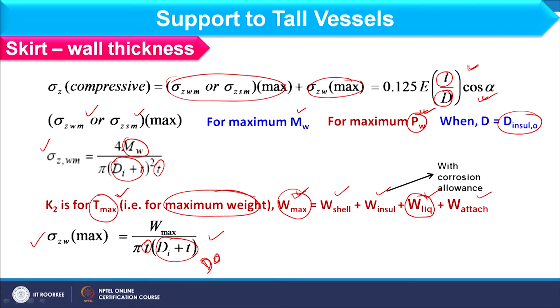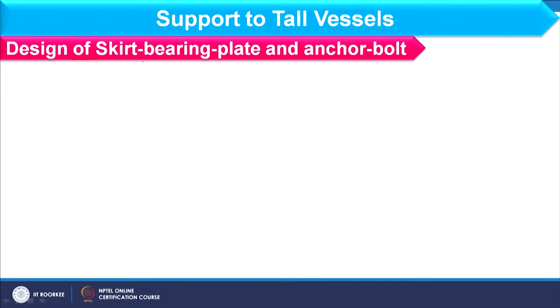Choose the larger thickness from the tensile and compressive stress conditions. Verify that the chosen value is at least 7 mm; otherwise, use 7 mm as the skirt thickness. Next, we consider the design of the skirt bearing plate and anchor bolt.